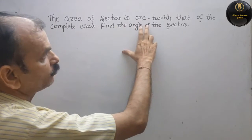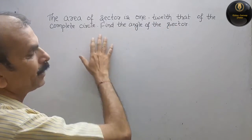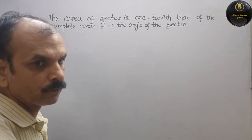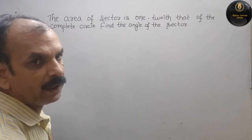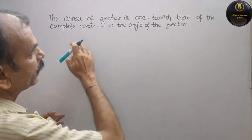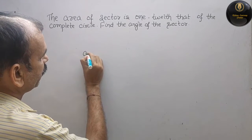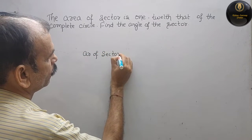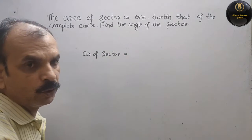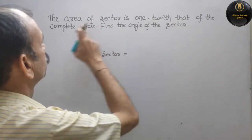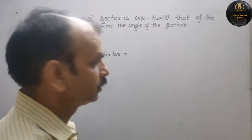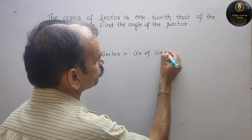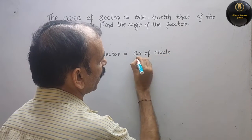The area of the sector is one twelfth that of the complete circle. Find the angle of the sector. That is equal to the complete circle area, which is one twelfth. We will write: area of a circle divided by twelve.